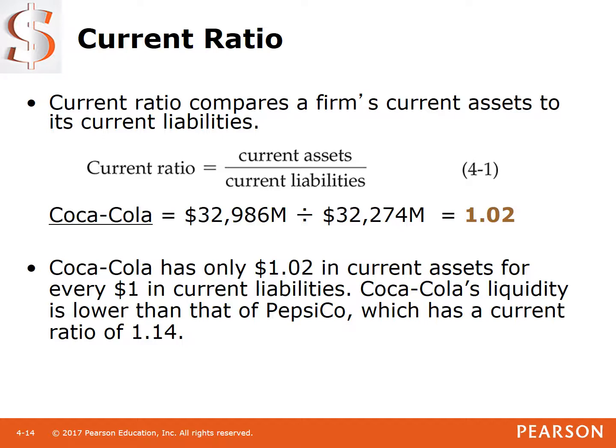The current ratio is calculated by taking the company's current assets — for Coca-Cola, $32,986 million — and dividing that by their total current liabilities, $32,274 million. That gives us a ratio of 1.02. From a dollar-to-dollar perspective, Coca-Cola has $1.02 in current assets for every $1 it has in current liabilities, or it can pay its current liabilities 1.02 times.